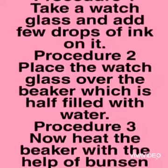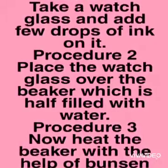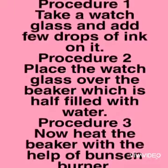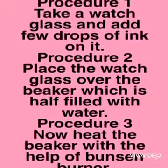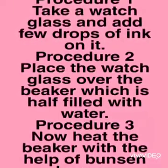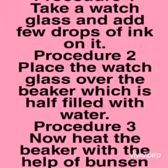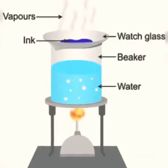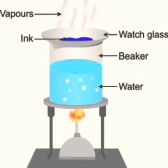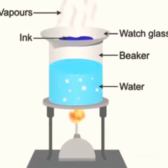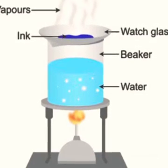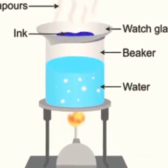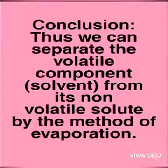Procedure 3: Now heat the beaker with the help of a Bunsen burner. While heating, the steam will be released and the ink will start separating its dye. The water particles in the ink will slowly start evaporating, leaving behind some residue, and the residue that will be left over is our dye.